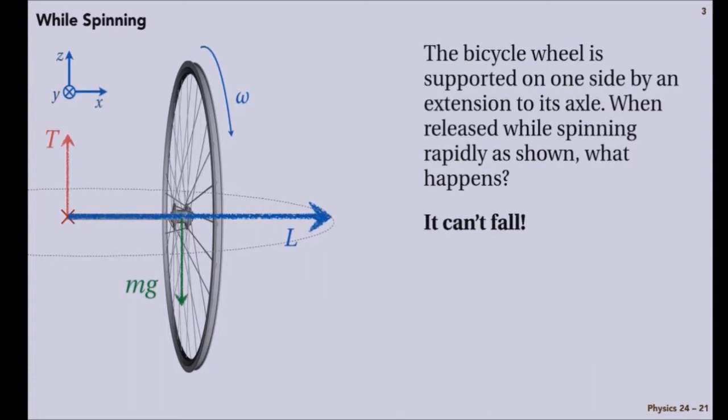Well, if it did what the wheel did before and just fell down, so that the axle changed, then this big angular momentum vector would change in what direction? It would go down, right? So if I start here and I go down that way, the change would be down.